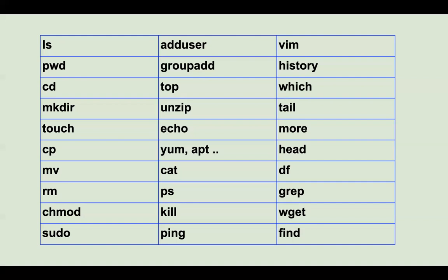Then you have 'ping'. ping is used to check whether you can reach a specific server or website. For example, if you want to check whether you can access google.com, simply run 'ping google.com'. If you have an internet connection, you will get a response, confirming connectivity.